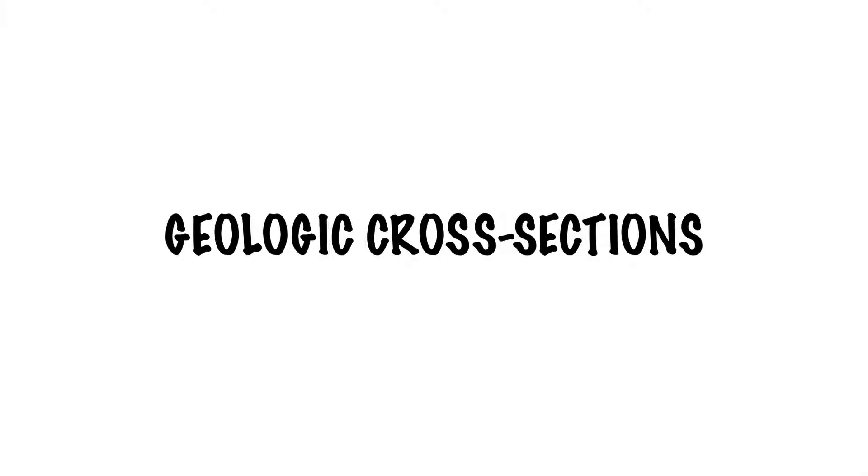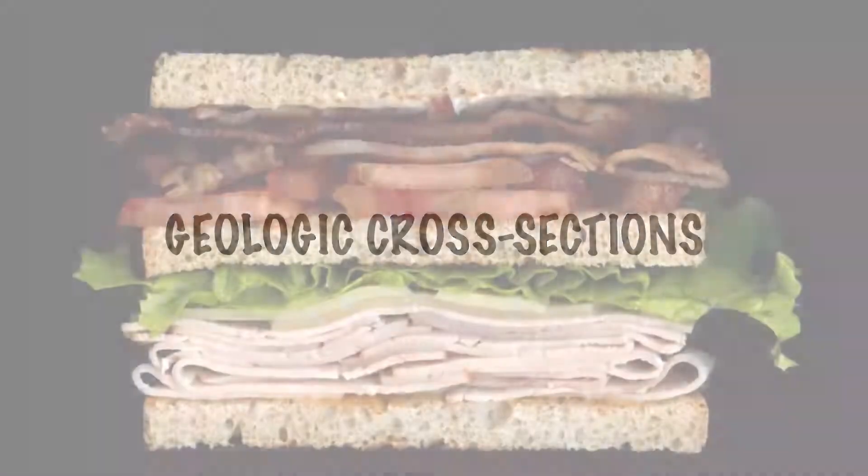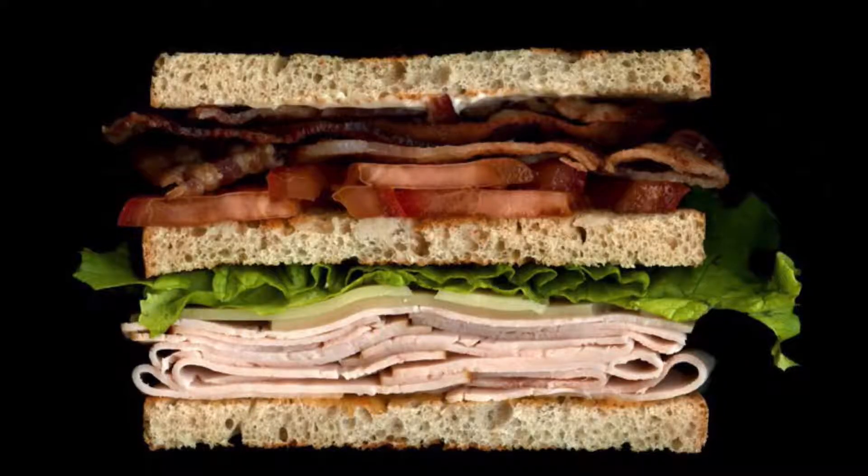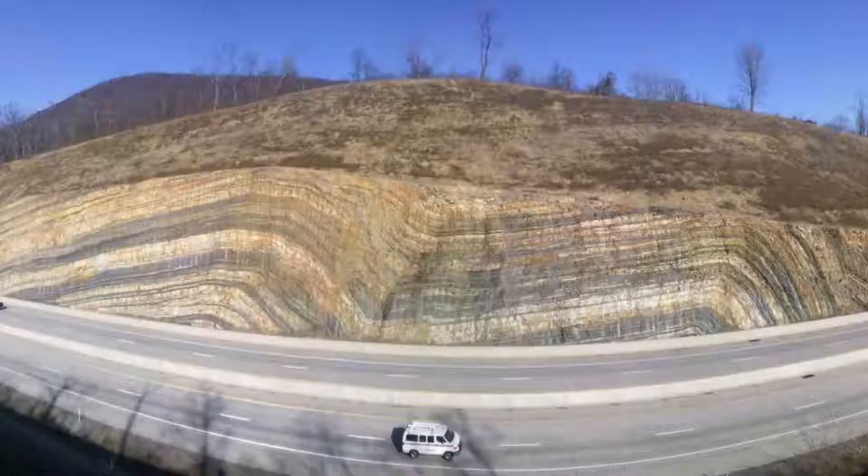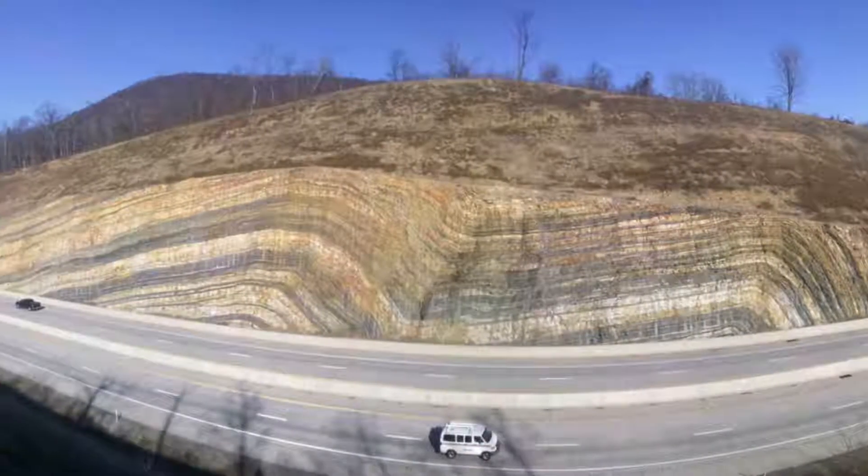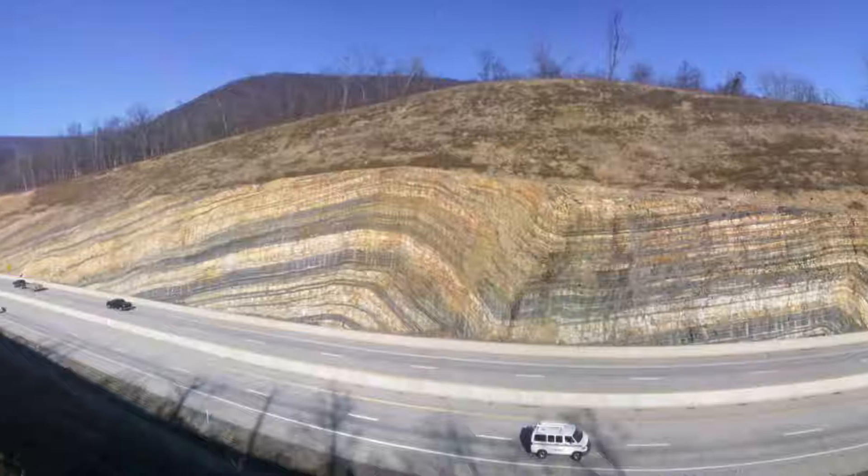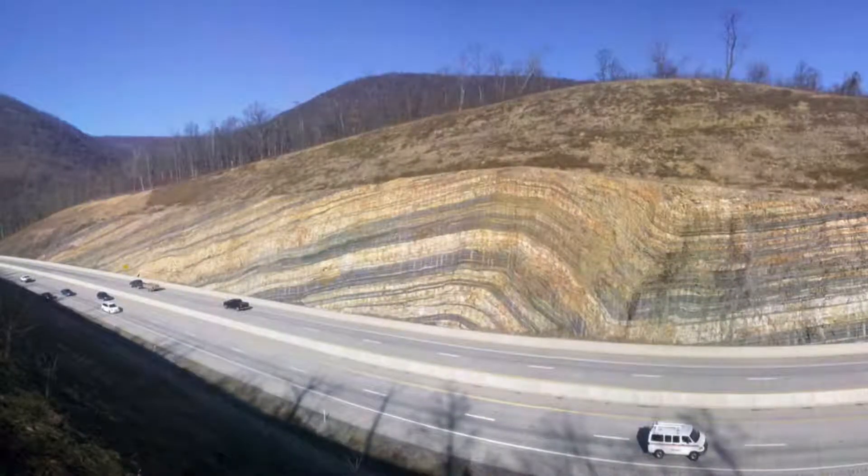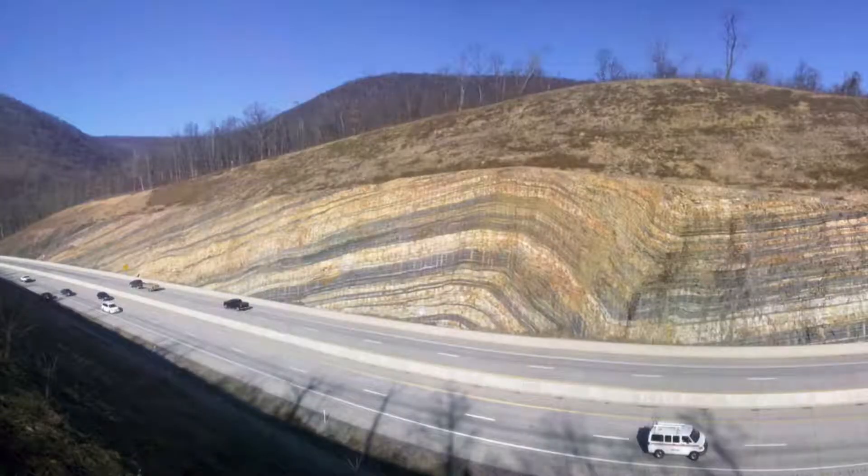Most of our work today will be dealing with geologic cross-sections. Now a cross-section is looking at the inside of something. So if you made a sandwich, and this one looks delicious, if you cut it in half and you stared at the inside of it, that's a cross-section. So if you want to put it into a geologic sense, this is also a cross-section. You can see the different layers, the stripes, those all represent layers of sedimentary rock that have been put down in the past.